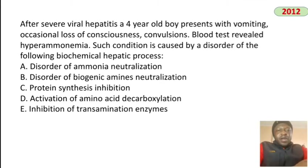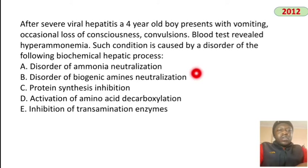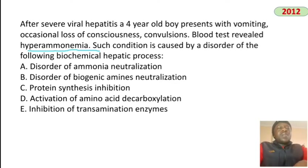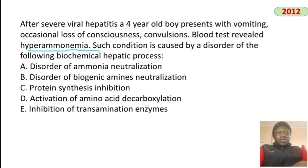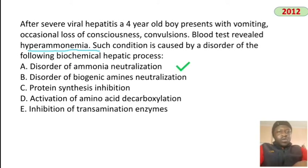After severe viral hepatitis, a boy presents with vomiting, occasional loss of consciousness, and convulsions. Blood test reveals hyperammonemia. High ammonia concentration means there is a disorder in detoxifying ammonia — specifically a disorder of the urea cycle. The answer is disorder of ammonia neutralization.